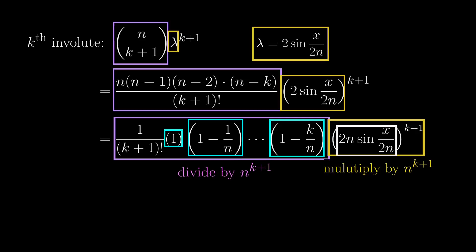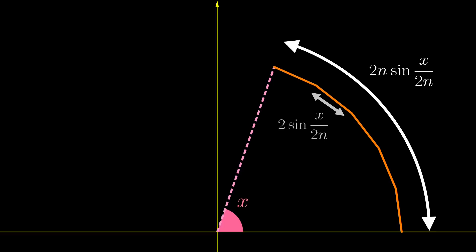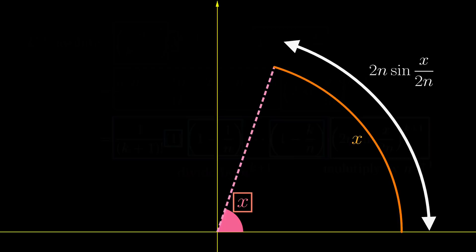For the yellow part, we have to multiply our n to the k plus 1 back, which can be done by just putting the n in the bracket. But what is 2n sin x over 2n? This is precisely the total length of the 0th involute, because as we have found earlier, the length of each segment is 2 sin x over 2n, and there are n of these segments. So as n grows bigger, it is supposed to be an actual circular arc. Since the angle of the arc is x, the true circular arc has length x, by definition.